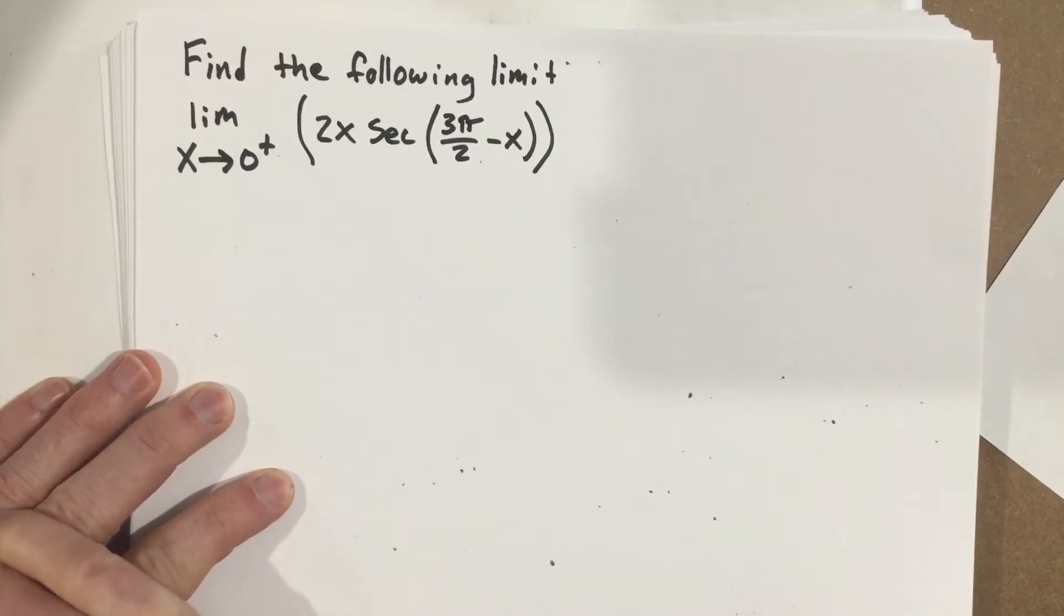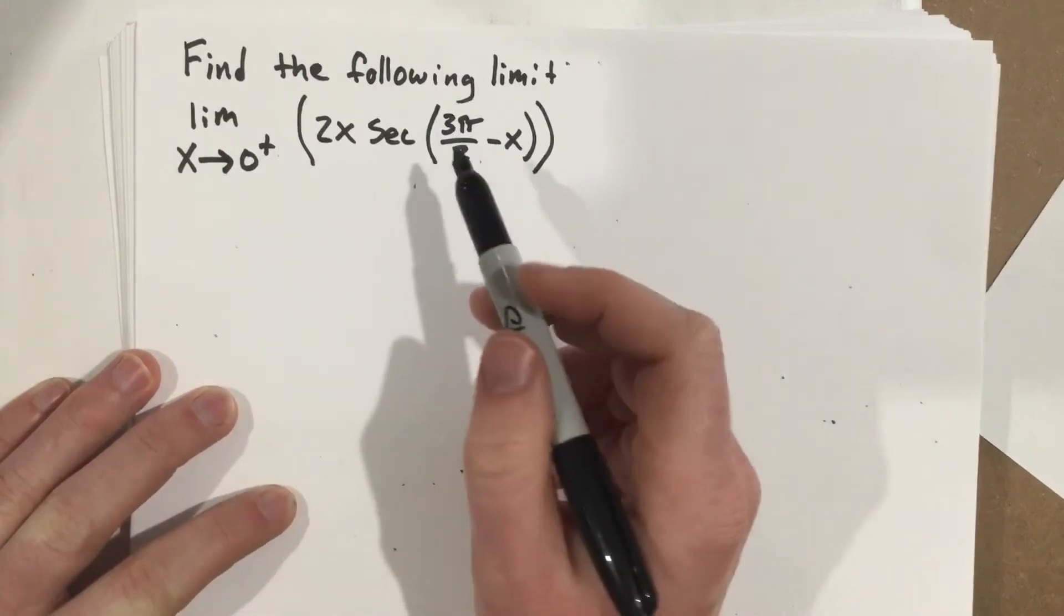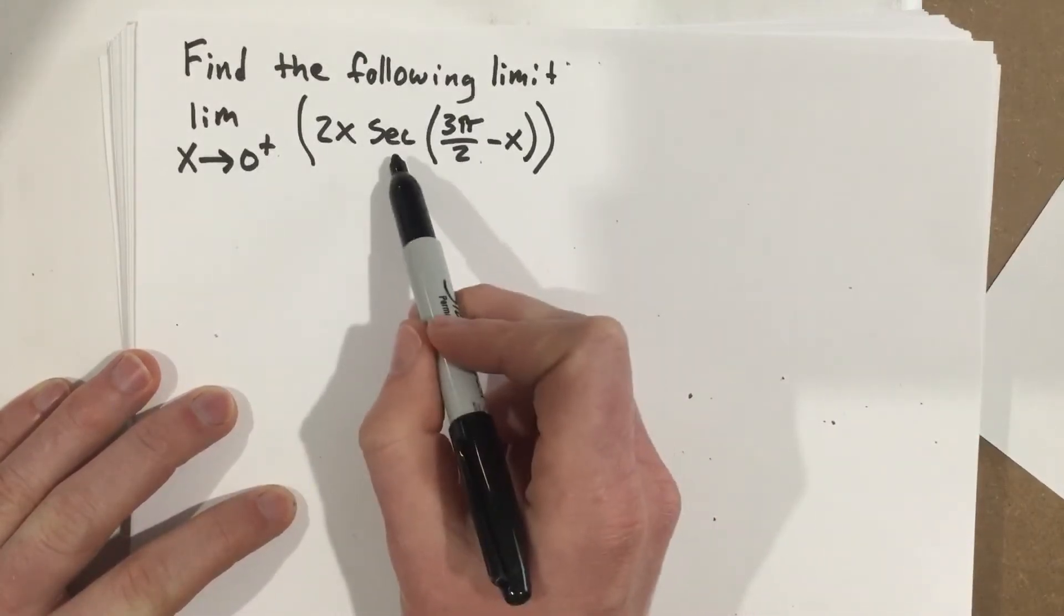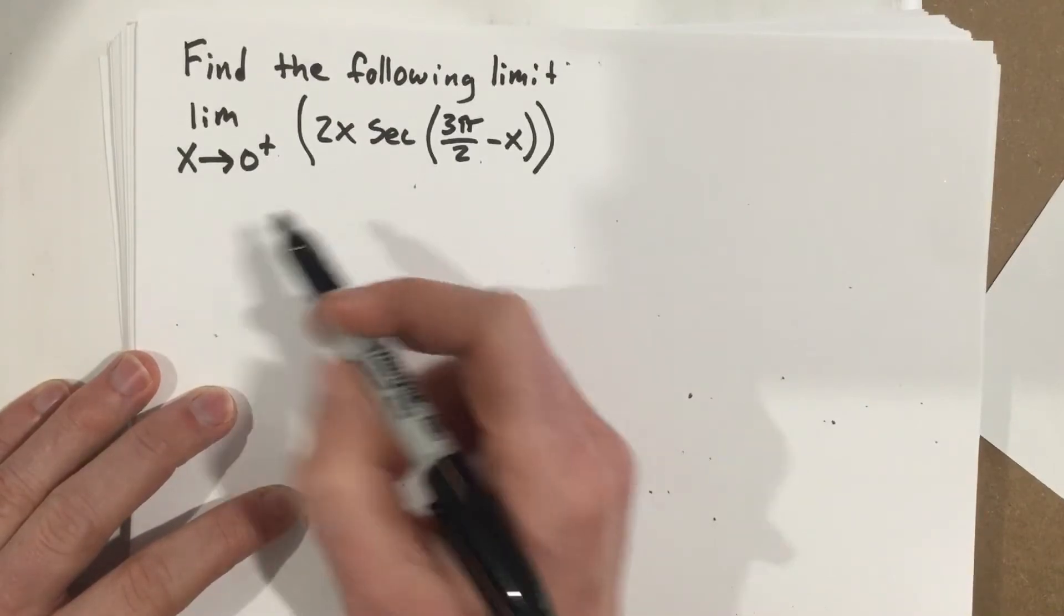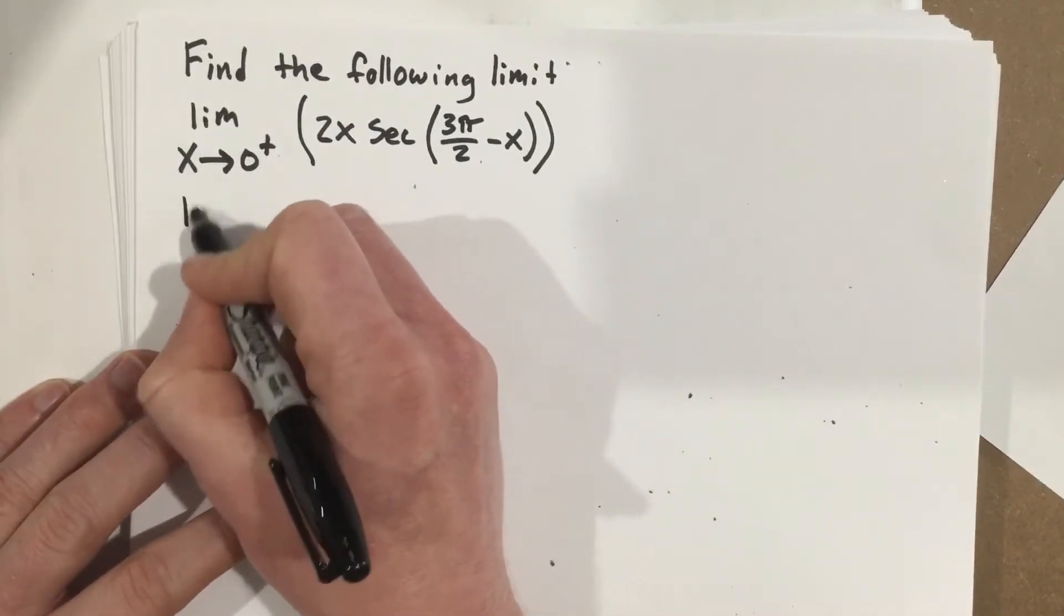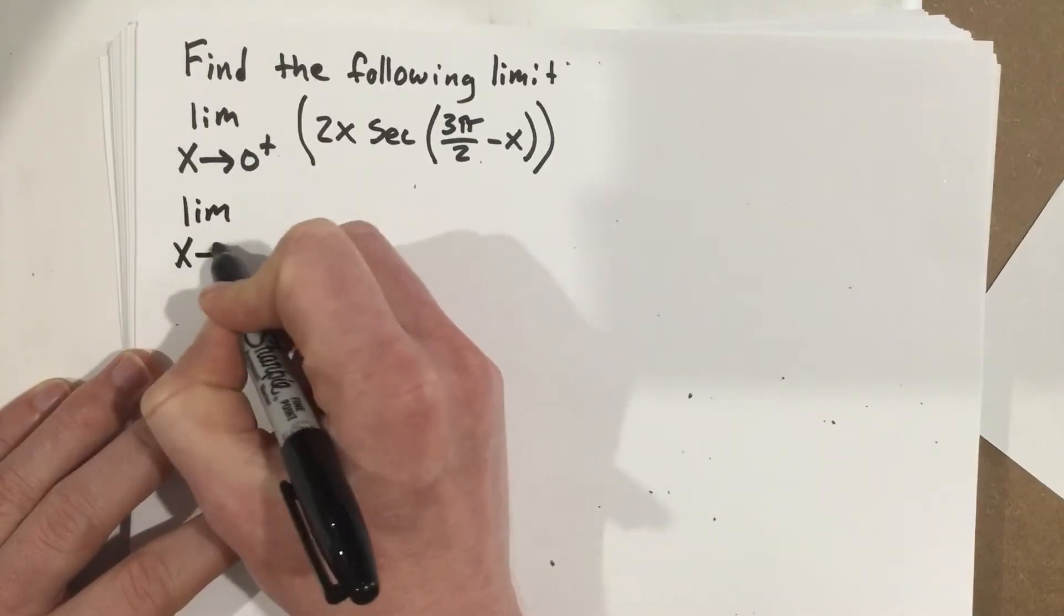So we need to use L'Hopital's rule here. But before we can use L'Hopital's rule, we need to get this into a fraction form. I said that secant is 1 over cosine. So that's how we're going to start.